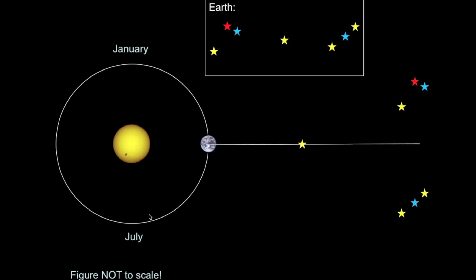What if we're in between July and January over the course of the year? Then when we look out towards the nearby star, it will appear in the middle of that view.